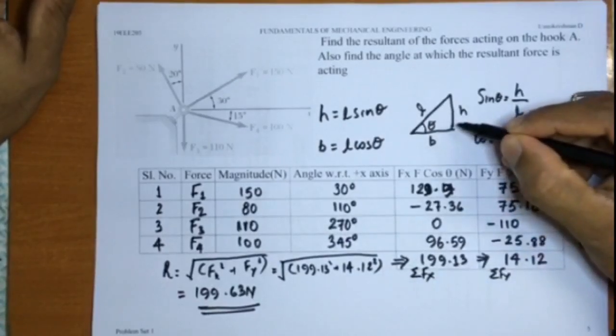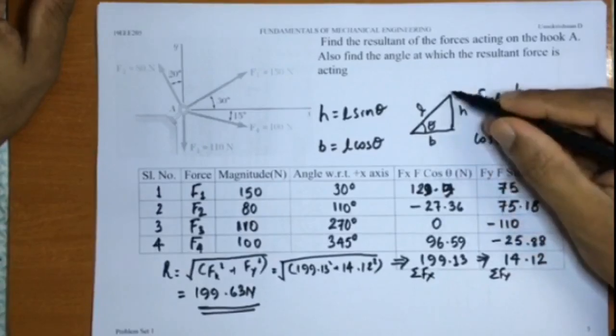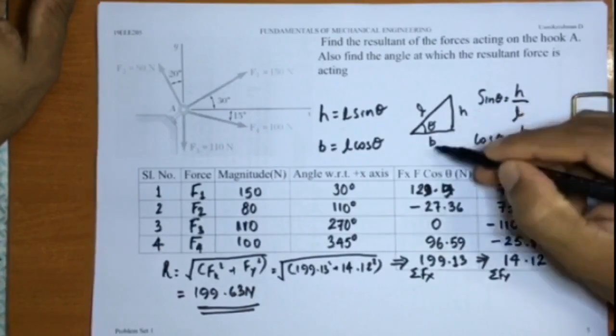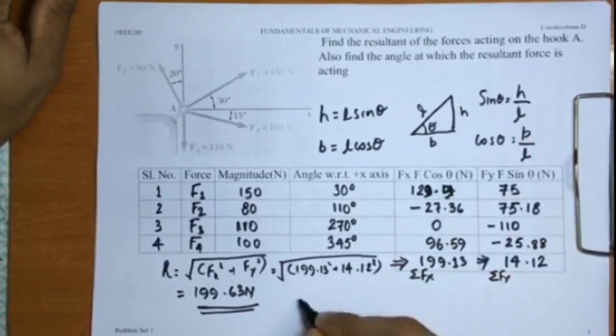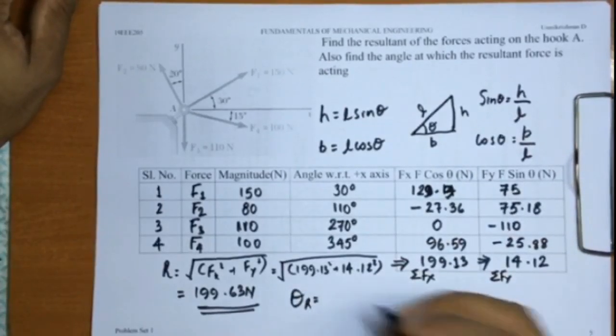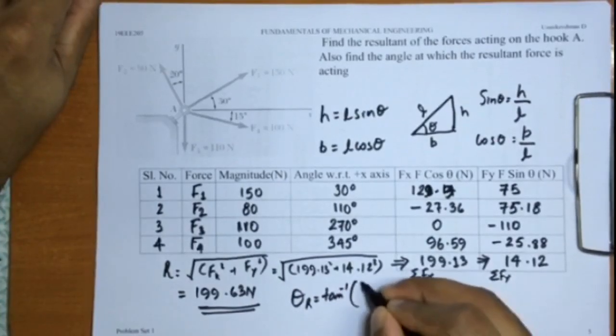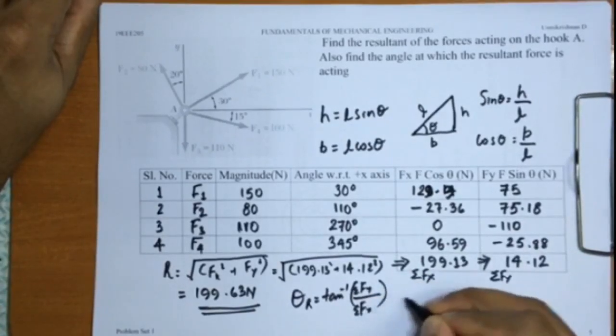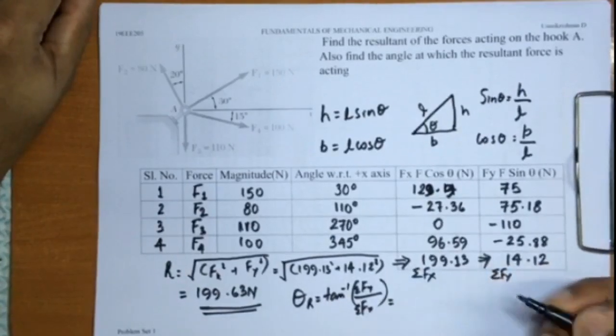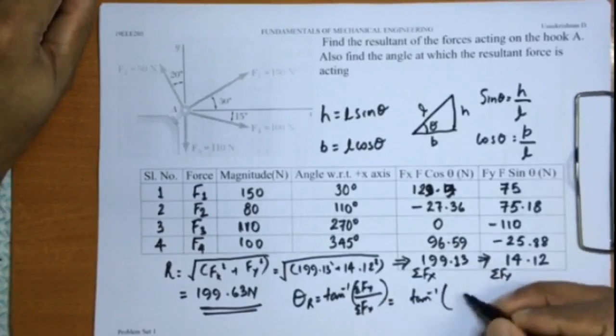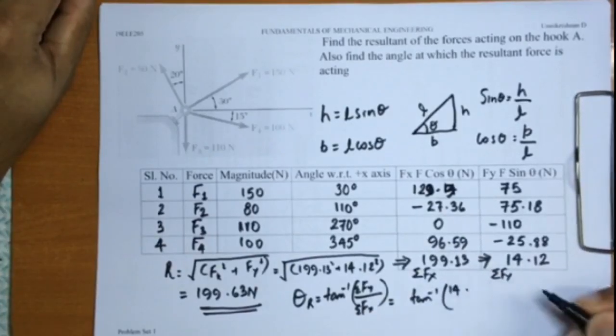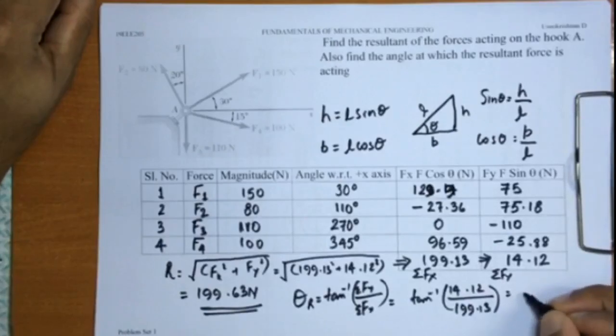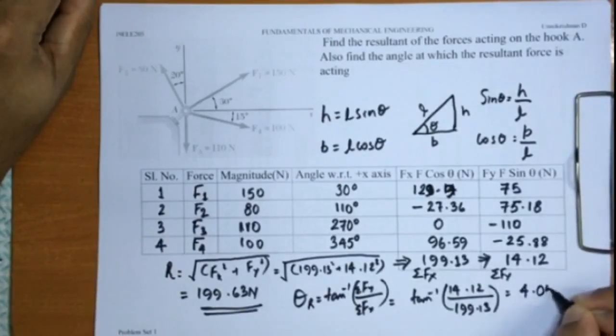Now what about the angle? You can use the same principle here. You have the x component, you have the y component. To find out the resultant angle theta here, all that you have to do is tan inverse of Fy divided by Fx. So theta of the resultant R is equal to tan inverse of Fy by Fx, or sigma Fy by sigma Fx, which turns out to be in this case tan inverse of 14.12 divided by 199.13, which is approximately 4.05 degrees.